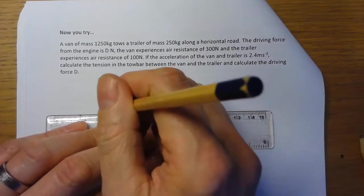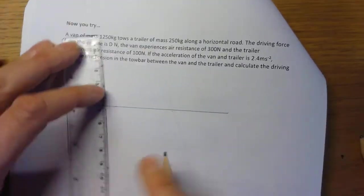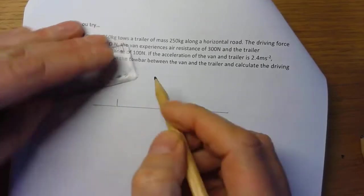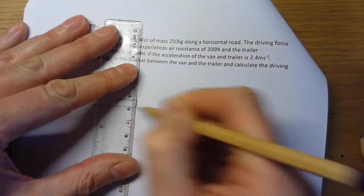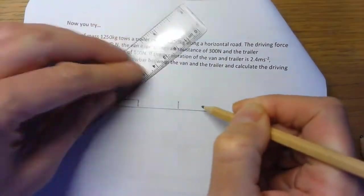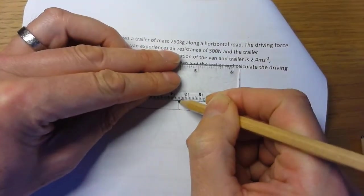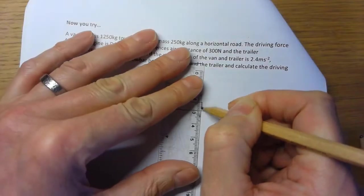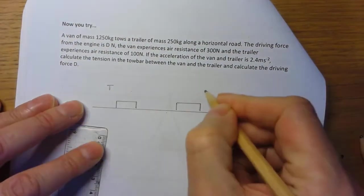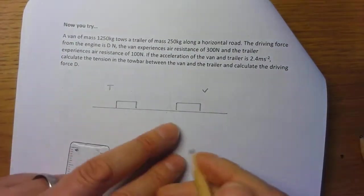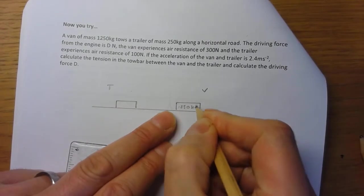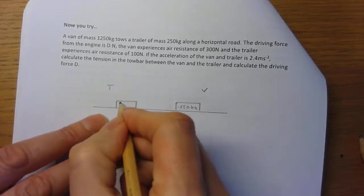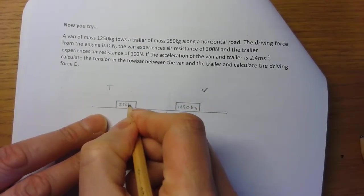Okay, so let's get our sketch right. We'll have our trailer on the left and our van on the right. I'm going to label those T and V. So the van is 1250 kilograms, the trailer is 250 kilograms.